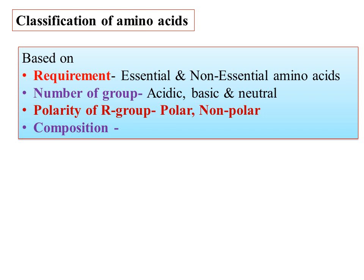Amino acids are the building blocks of proteins. Proteins are biopolymers. Polymer — monomer units. Poly means many units. Many individual units combined together form a polymer.